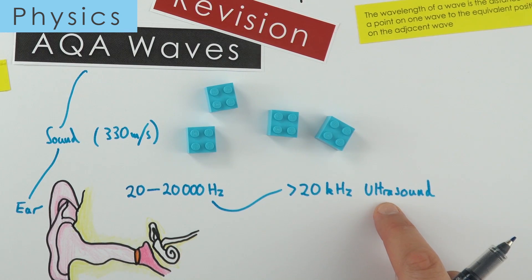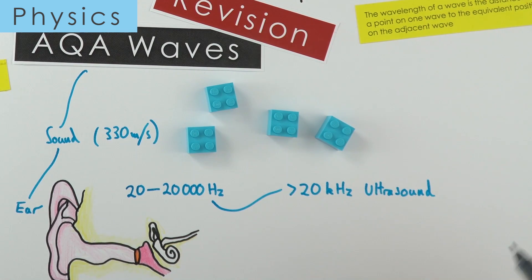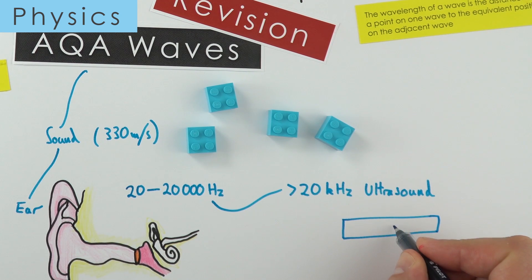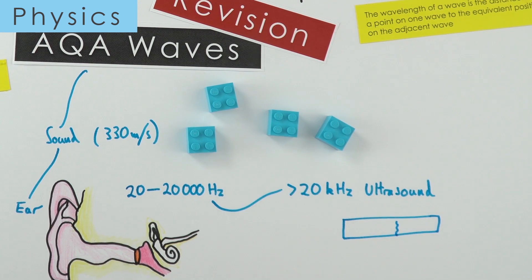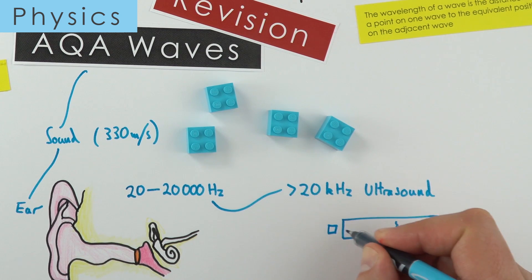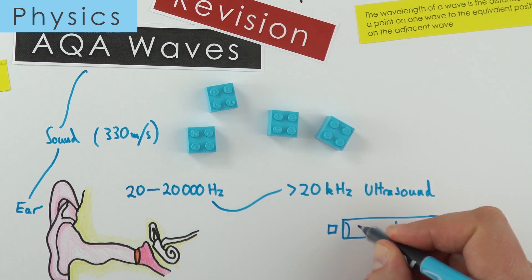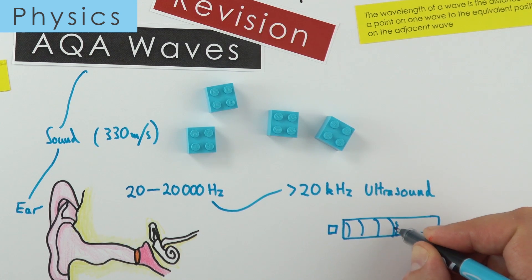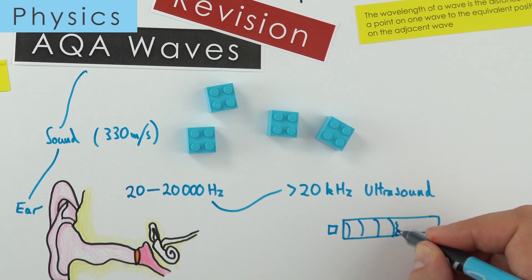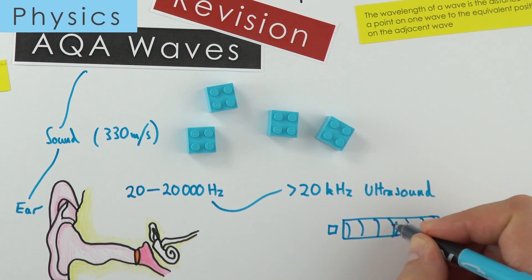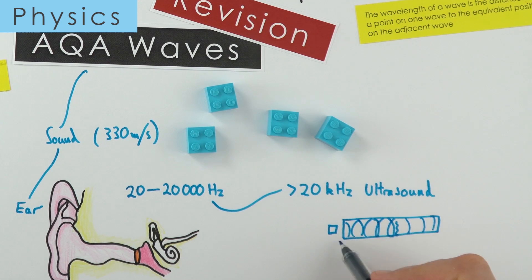With ultrasound, we can actually use this to look inside things that we can't see. A very simple example would be if you had a pipe with a crack in it somewhere. If you had a transducer which sent down an ultrasound wave, the wave would travel down the pipe, and when it gets to a boundary or where there's a crack, we get a partial reflection. Some of the wave might pass through, but some of the wave would bounce back.